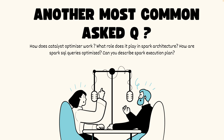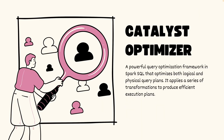These are the most commonly asked questions around Catalyst Optimizer which you can face in any Spark interview. You should also know about Spark Catalyst Optimizer if you work with Spark or are planning to work with Spark as a data engineer. Catalyst Optimizer is an optimization framework — a very powerful and key framework in the Apache Spark SQL module that optimizes both logical and physical query plans, giving you a better execution plan so that your query executes efficiently. It applies a series of transformations — both rule-based and cost-based optimizations — to produce efficient execution plans.